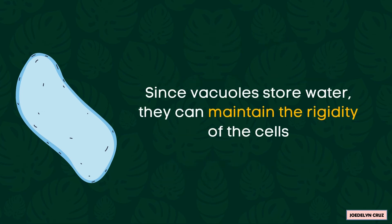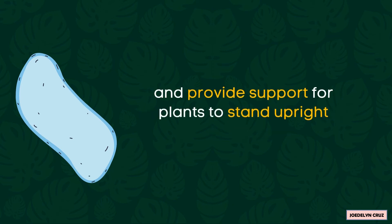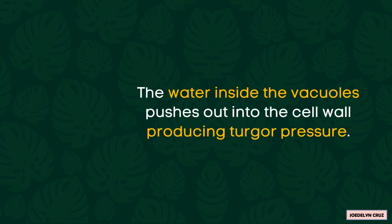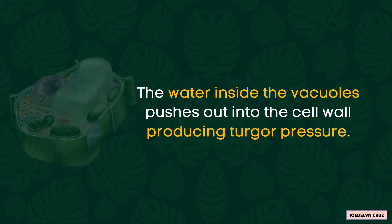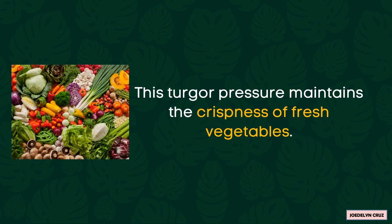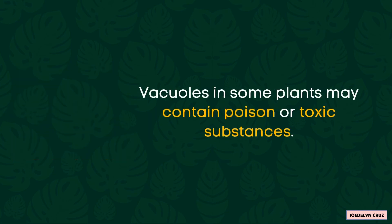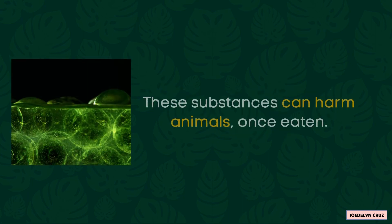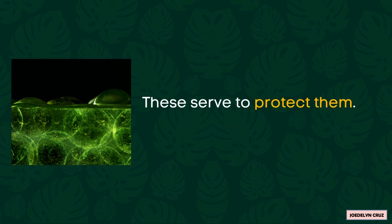Since vacuoles store water, they can maintain the rigidity of the cells and provide support for plants to stand upright. The water inside the vacuoles pushes out into the cell wall, producing turgor pressure. This turgor pressure maintains the crispiness of fresh vegetables. In addition, vacuoles in some plants may contain poison or toxic substances. These substances can harm animals once eaten, so they serve to protect the plant.